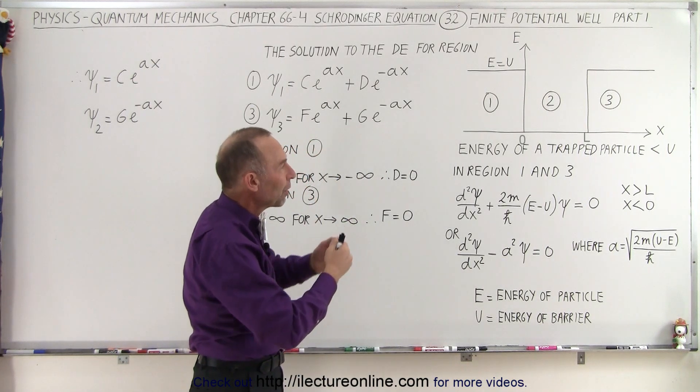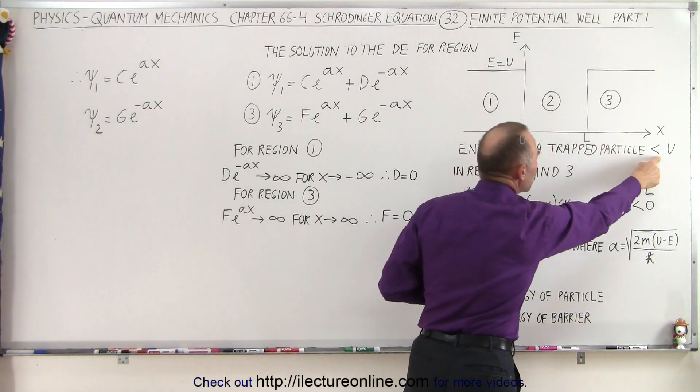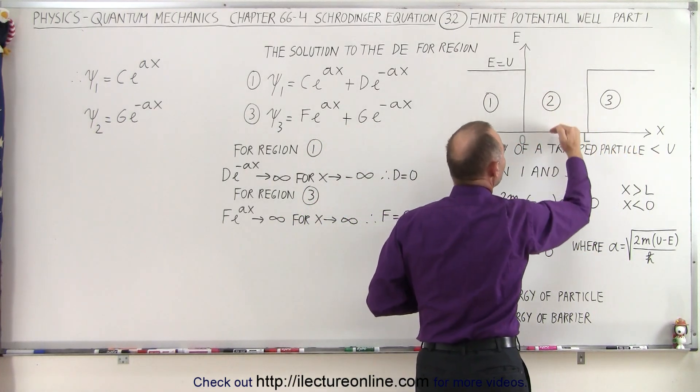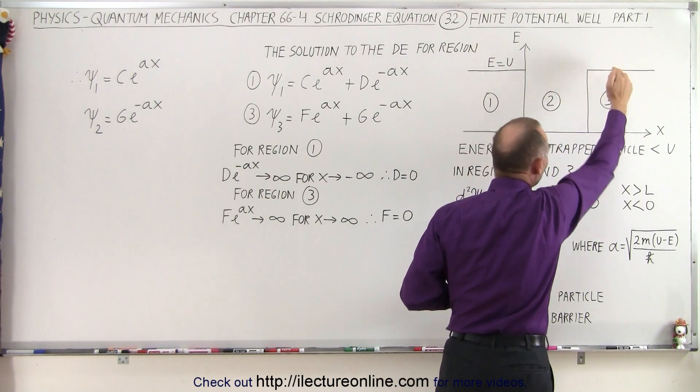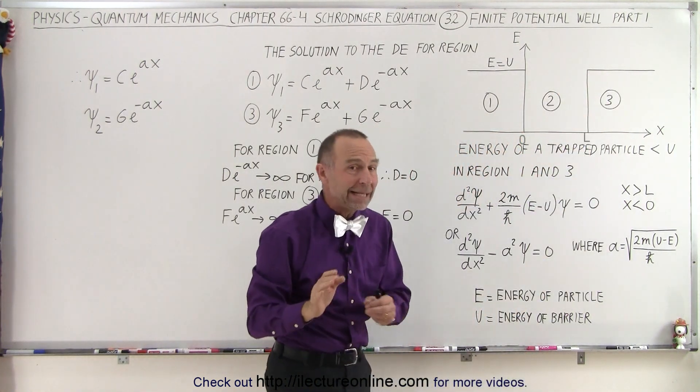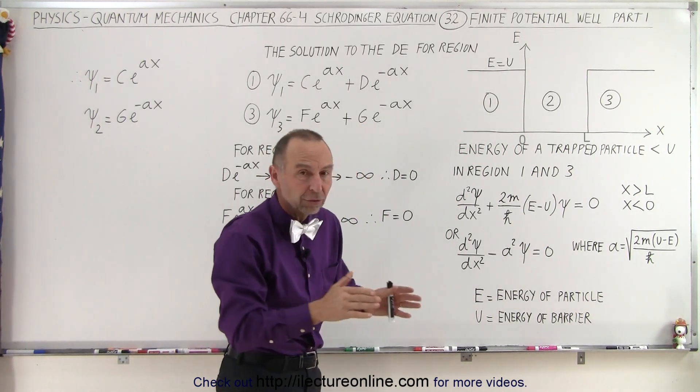Now, first of all, we want to understand that the energy of the trapped particle will be less than u. In other words, wherever it's at, the energy of the particle is less than the energy required to get over the barrier. But that doesn't mean it cannot, in part, get through the barrier, or at least into the barrier to some distance.